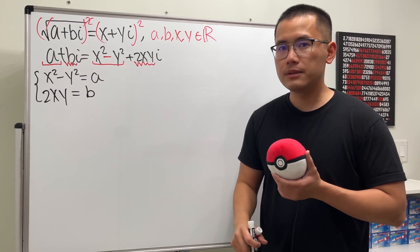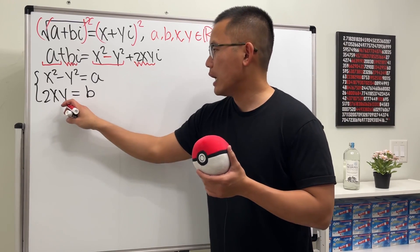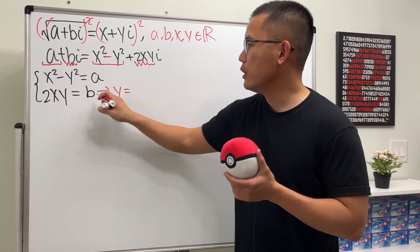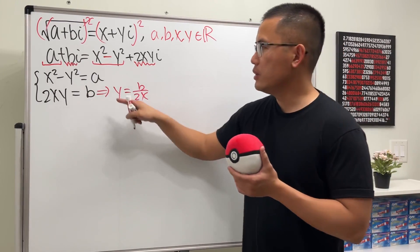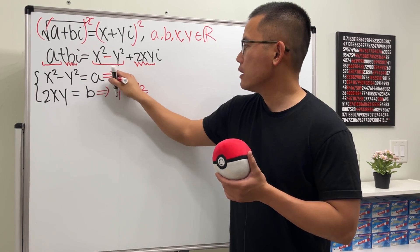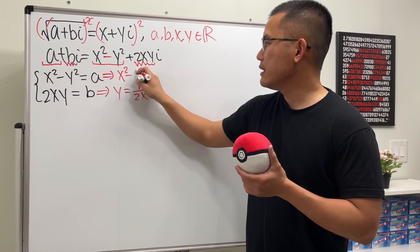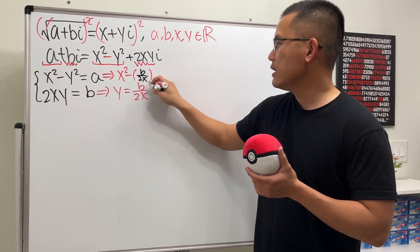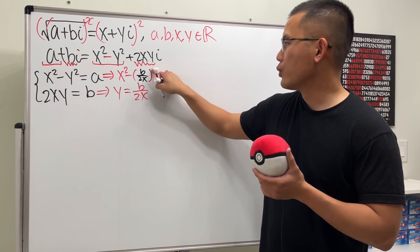To solve the system, isolate y from the second equation: y = b / (2x). Then substitute this into the first equation, giving x² - (b / 2x)² = a.